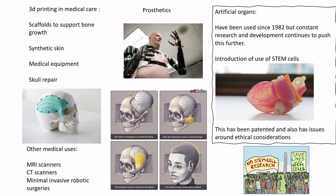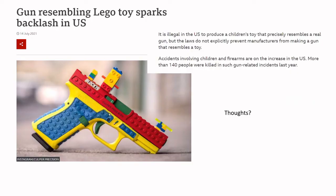An interesting example from July 2021: a product resembling Lego was produced that looked like a gun. In the US it's illegal to produce a children's toy that resembles a gun, but there's nothing preventing a gun being made to look like a toy. Lego set up a lawsuit and forced the company to withdraw it. In the UK guns aren't really a thing, so this raises obvious cultural and moral questions.